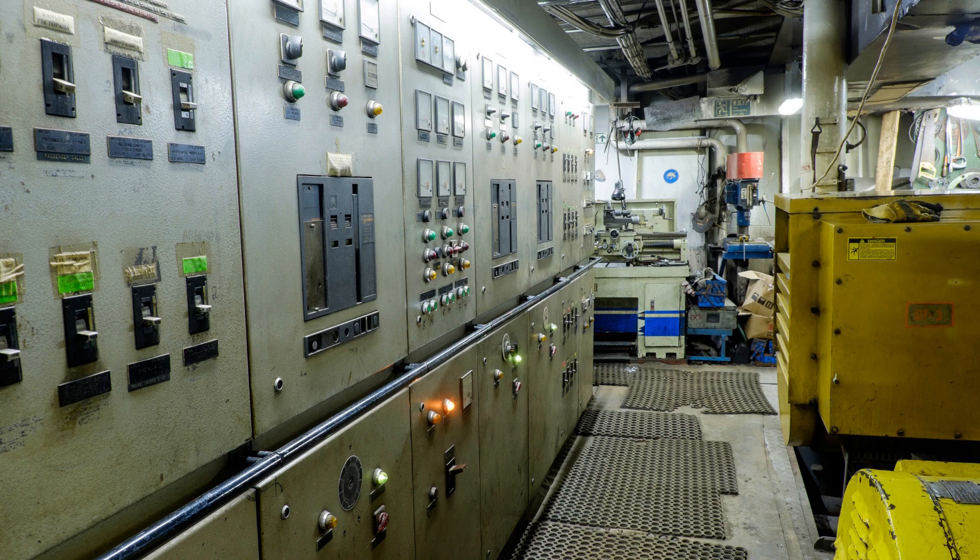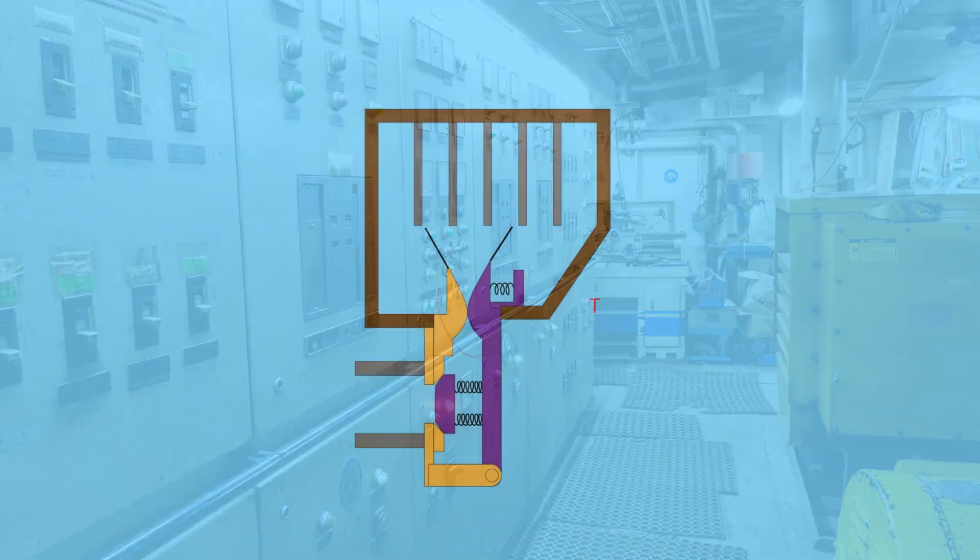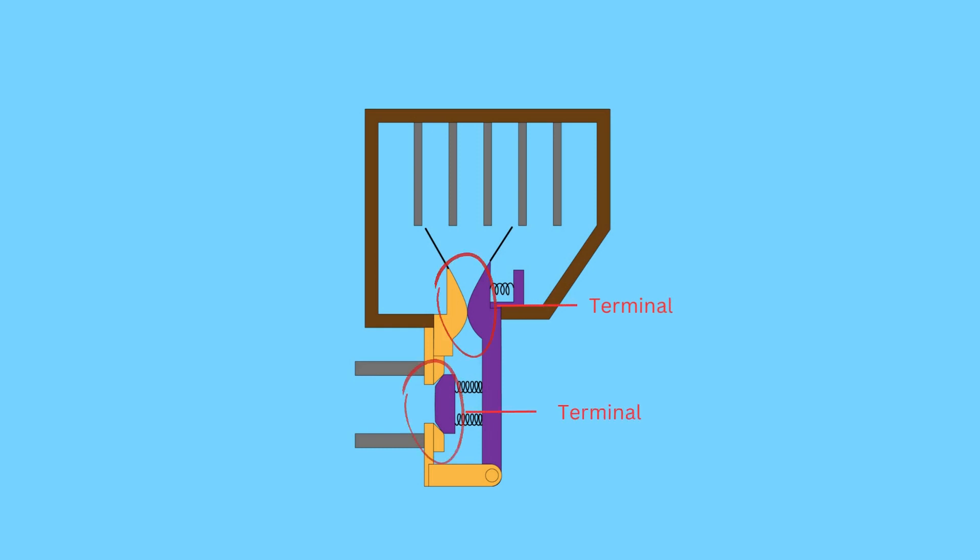The internal parts of ACB mainly include the terminals through which the current supply happens. The main pair of contacts carries the current at normal load, and these contacts are made of copper metal.